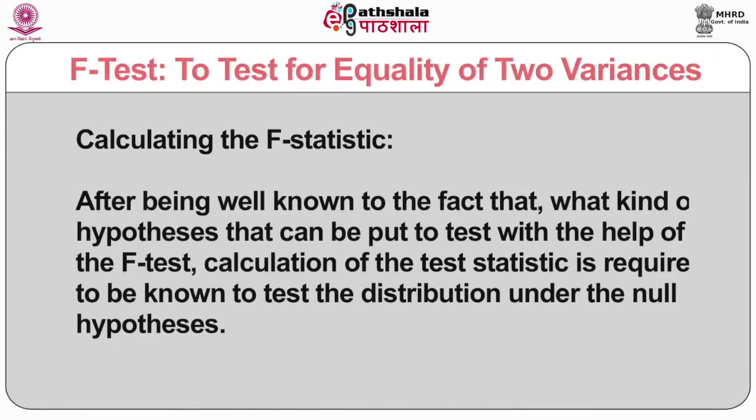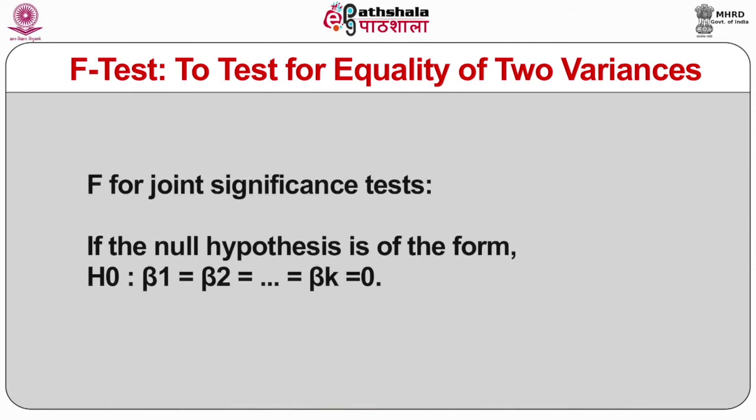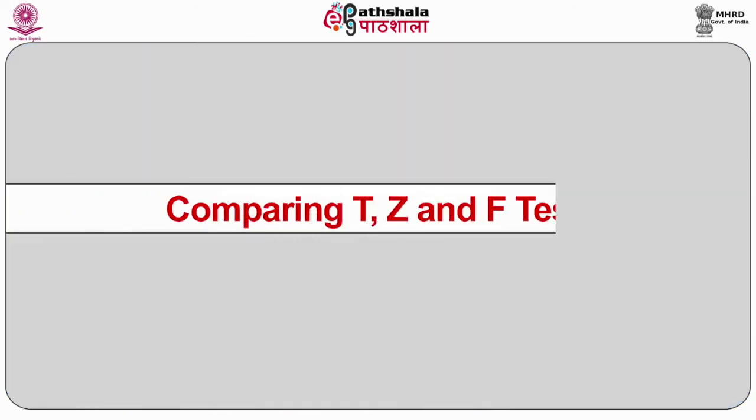Now, calculating the F-statistics: after knowing what kind of hypothesis can be put to test with the help of F-test, the calculation of the test statistics is required to test the distribution under the null hypothesis. The F0 for the joint significance test can be calculated if the null hypothesis is of the form B1 = B2 = ... = Bk = 0. Now, after understanding F-test, it is time to compare it with the T and the Z-test.